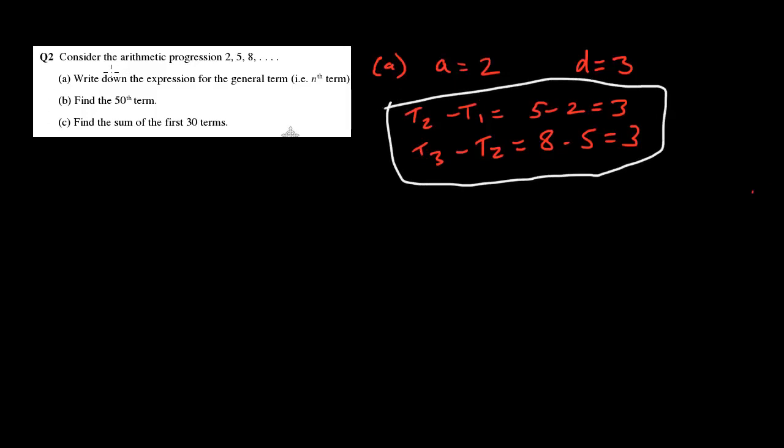Okay, moving on. Now, it's saying we need to write down the expression for the general term, i.e. the nth term for this arithmetic progression. Now, we should all recall that the formula, the general formula for the nth term is just tn equals a plus (n minus 1) times d.